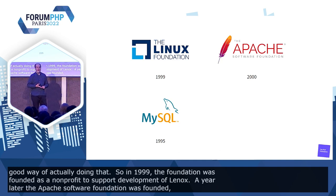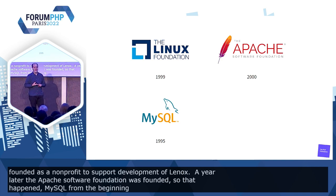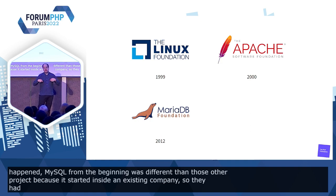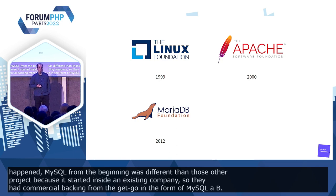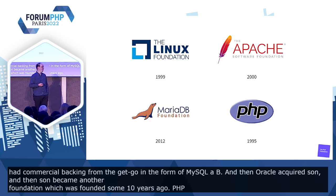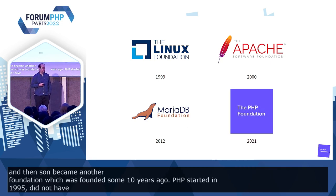MySQL was different from those other projects because it started inside an already existing company, so they had commercial backing from the get-go in the form of MySQL AB. Then Sun acquired MySQL, Oracle acquired Sun, and suddenly we have the MariaDB Foundation, which was founded about 10 years ago. PHP, which started in 1995, did not have a foundation until last year. So how did that happen?